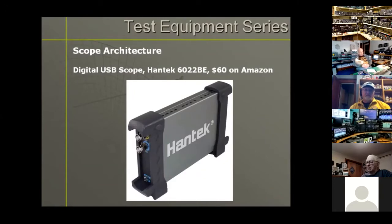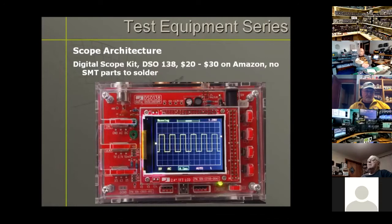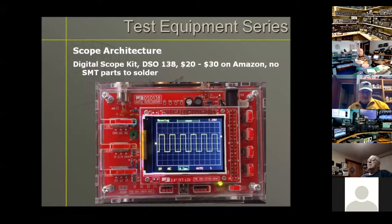There's nothing like a real separate scope instrument on your desk. If you want to try out a scope but don't want to spend a whole bunch of money, here's the DSO138 kit — you can get these off Amazon and eBay for $20 to $30 depending on whether you want the plastic case. They come as a kit with through-hole parts, no SMT soldering required. Put it together in a couple of hours and you've got a working digital oscilloscope to learn with. It only has about 100 kHz of bandwidth but it's a nice device to learn on.